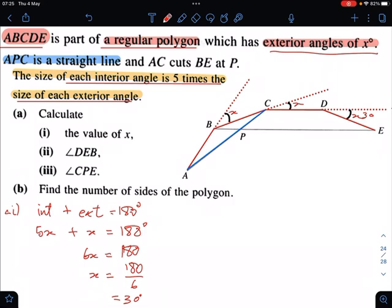So this is 30 degrees. We are required to find angle DEB, this angle here. Now do take note, a lot of students get confused because they do not know that CD is parallel to BE. Do take note, these 2 lines are parallel for a regular polygon.